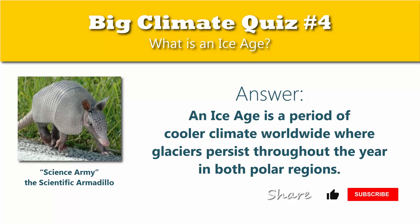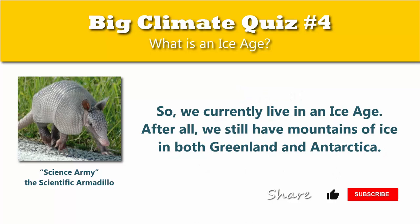Science Army — the scientific armadillo — says: The answer is that an ice age is a period of cooler climate worldwide where glaciers persist throughout the year in both polar regions. So we currently live in an ice age. After all, we still have mountains of ice in both Greenland and Antarctica. We'll see you next time.